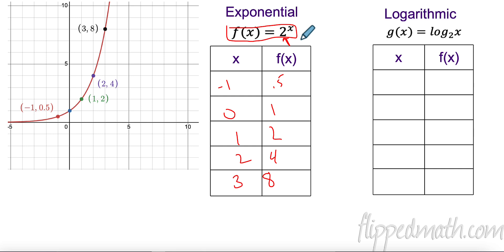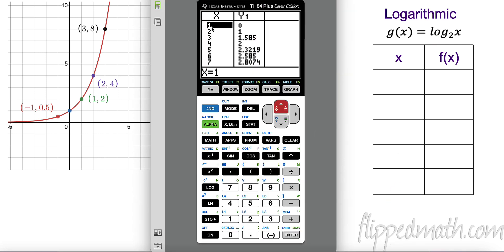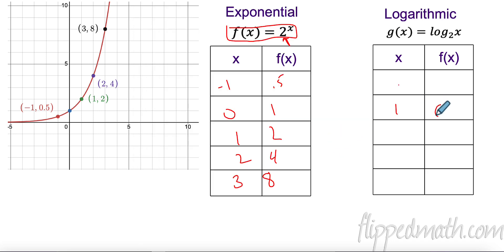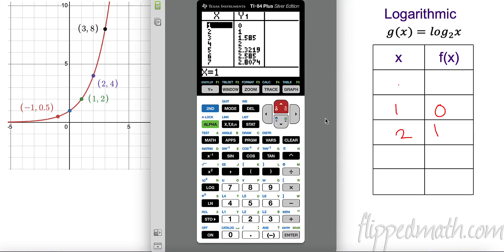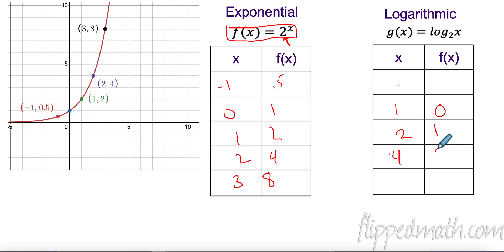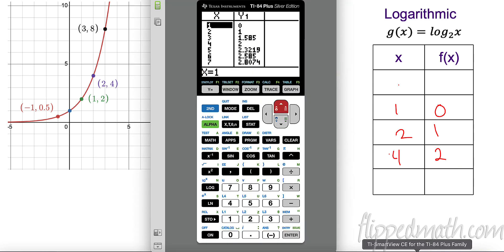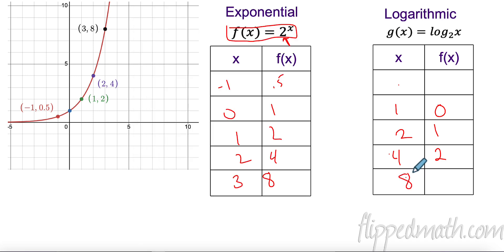Now let's talk about the logarithm with base two. We could calculate these without a calculator. I see one and zero — that's a good one — and two and one. Let's find some other easy ones: four and two, eight and three. By good numbers I mean easy — no decimals. And there's also one-half and negative one — they're just backwards, right?